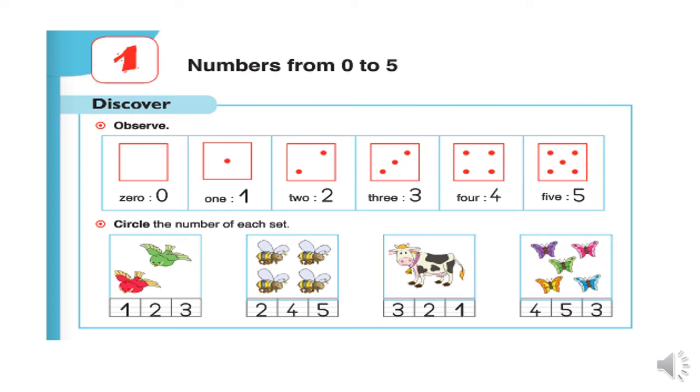How many bees do we have here? One, two, three, four. So, we circle number four.